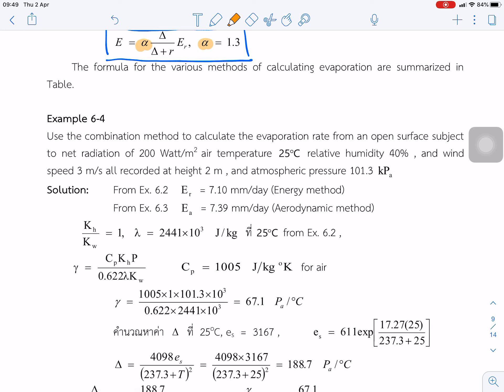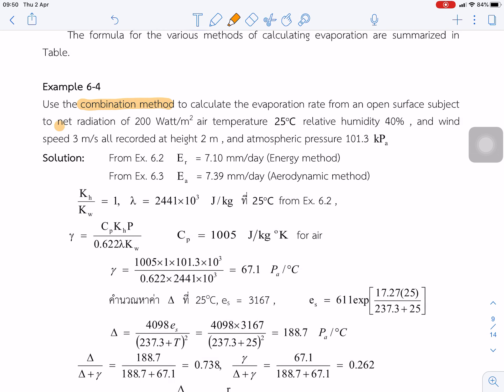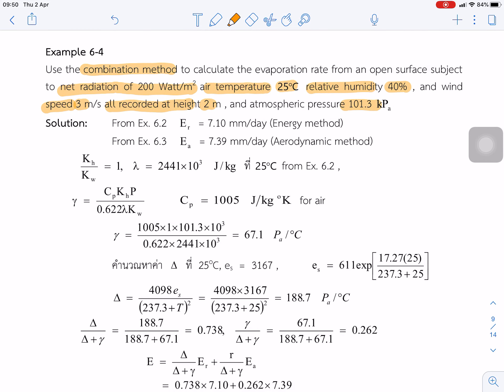Next example shows how to use the combination method. In this case, net radiation is 200 Watt per square meter, air temperature is 25°C, relative humidity is 40%, wind speed is 3 m/s recorded at height 2 meters, and atmospheric pressure is 101.3 kPa.